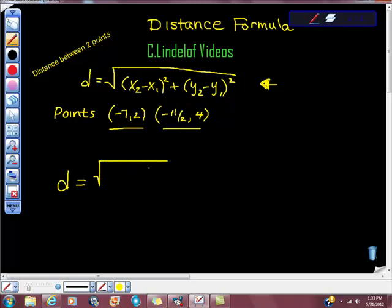let's put this problem together. So we have x sub 2, which is negative 11 halves, minus negative 7 squared.